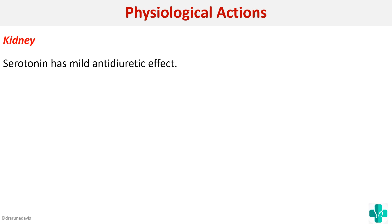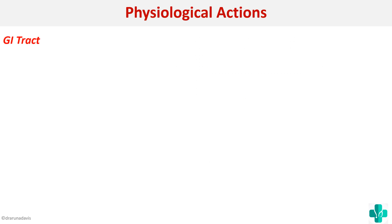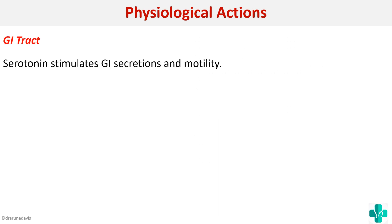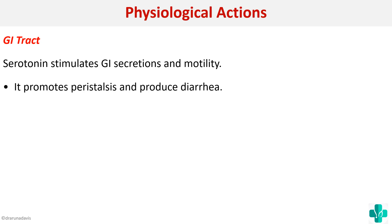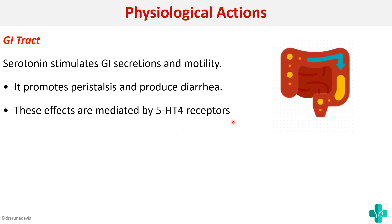For the kidney, serotonin has a mild antidiuretic effect — diuresis means removal of water as urine, so antidiuretic means urine output can be decreased. On the GI tract, it stimulates GI secretion and motility, promotes peristalsis, and produces diarrhea. These effects occur mainly through 5-HT4 receptors, activating the gastrointestinal system to increase both secretion and motility.